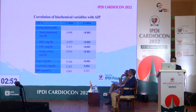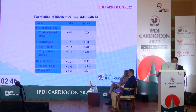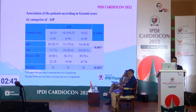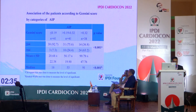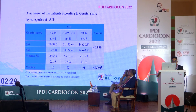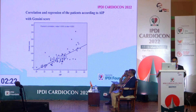Correlation of biochemical variables with AIP showed that all biochemical variables except RBS were statistically significant. Association of patients according to Jensen score by categories of AIP showed a significant correlation. The correlation curve was plotted, showing an R-value of 0.8 and P-value less than 0.001. Logistic regression analysis of predictors of severe Jensen score also confirmed that AIP is correlated with severe Jensen score.